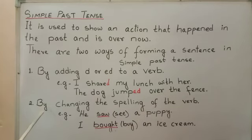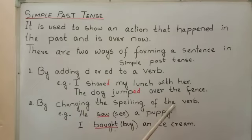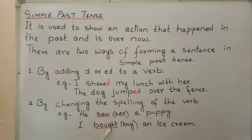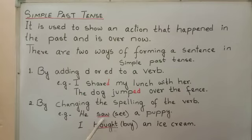Number two: by changing the spelling of the verb. For example, he saw a puppy. I bought an ice cream. Here, we change the spelling from see to saw, and here we change the spelling from buy to bought.